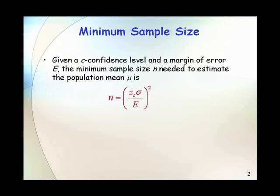Given a C confidence level and a margin of error E, the minimum sample size N needed to estimate the population mean mu is given by the formula N equals Z sub C times sigma divided by E, and the quantity is squared.